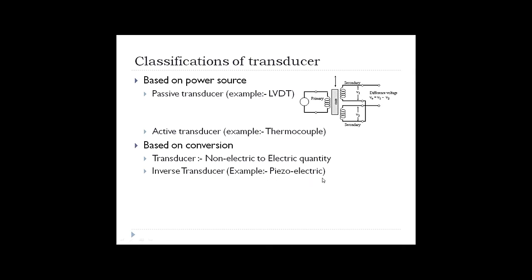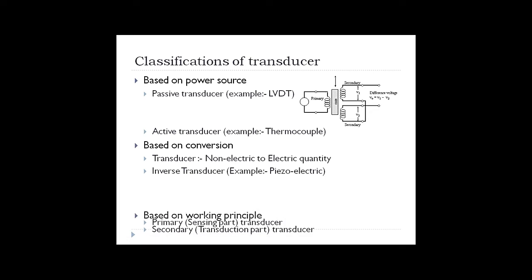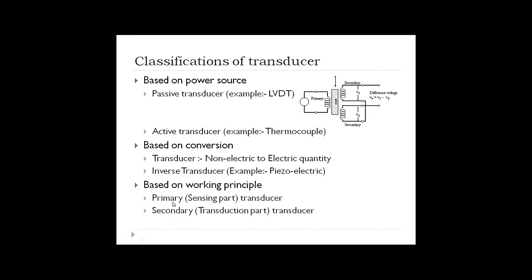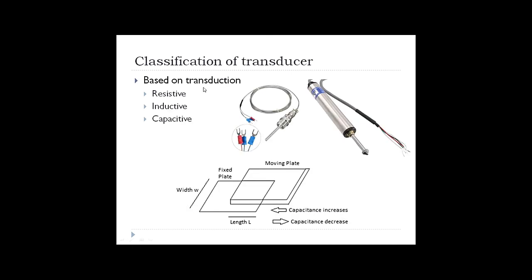Another classification is based on conversion: if a transducer converts a non-electric quantity into an electric quantity, we call it a transducer. If it converts an electric quantity into a non-electric quantity, we call that an inverse transducer — for example, a piezoelectric transducer. Based on working principle, transducers are classified as primary transducer (the sensing part) and secondary transducer (the transduction part). So far we have three classifications: based on power source, conversion, and working principle.